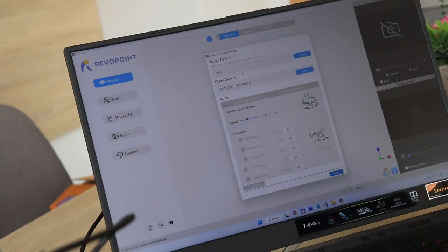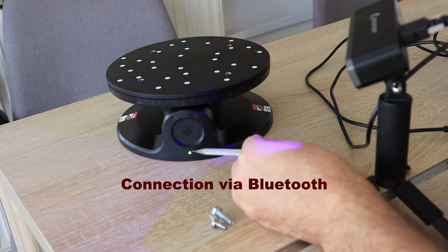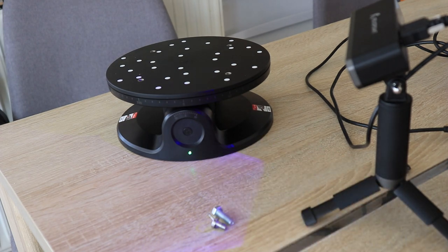There is an icon for the turntable. And search, and you can see it already. Okay, add. Connect. And I can see it is connected because this LED is constantly green. It doesn't blink anymore.